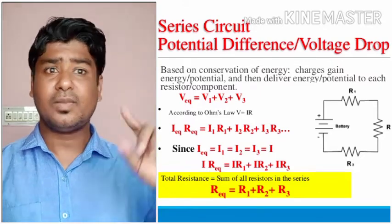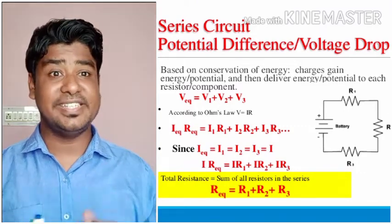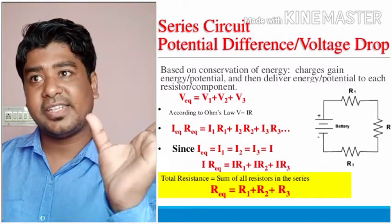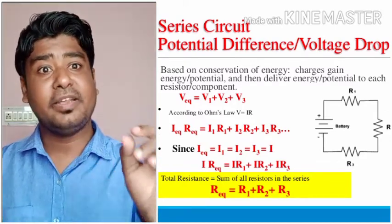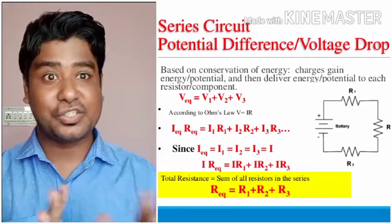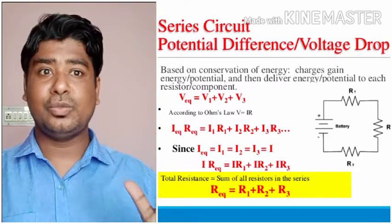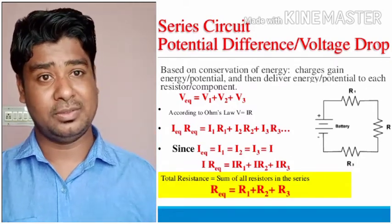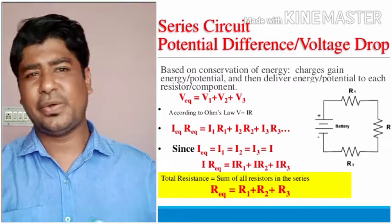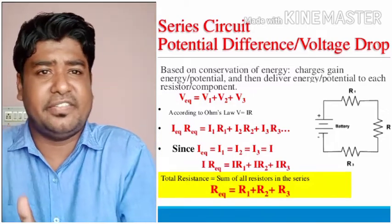From this we can write it mathematically. According to Ohm's law, V = IR. At resistor 1 it will be V1 = IR1, where I is constant and R1 is the resistance of the first resistor. Similarly, V2 = IR2 and V3 = IR3, and so on, because the potential difference is different across each.